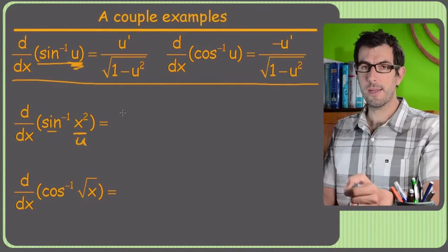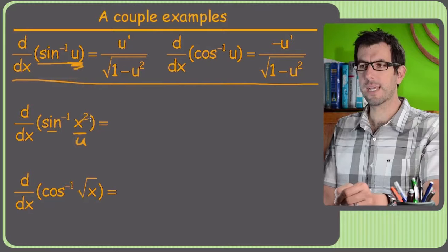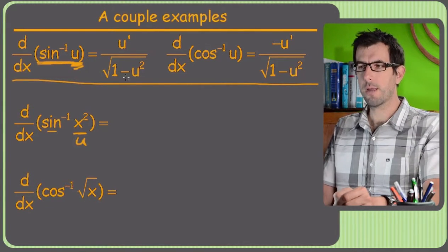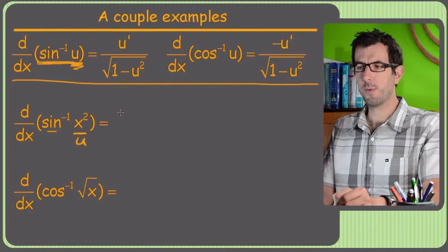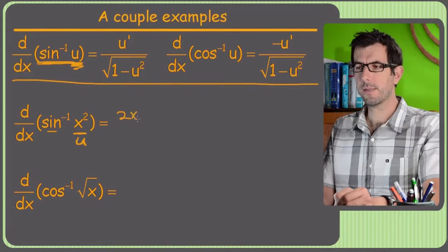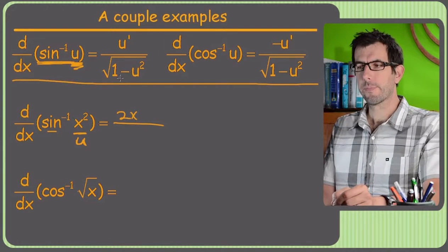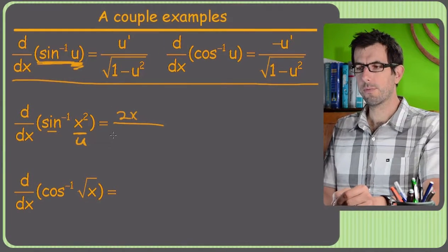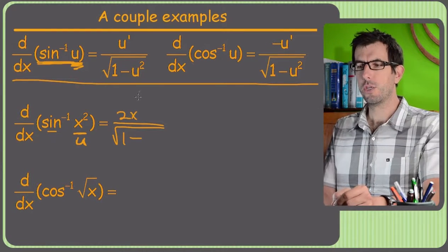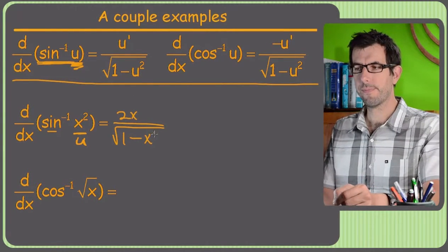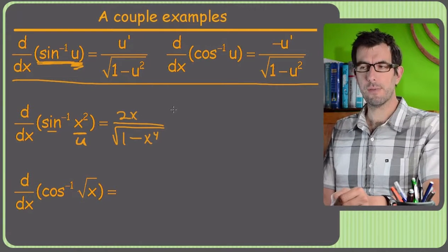So when I go to plug and chug, all I'm going to do is just assume that x squared is my U. So the derivative of the inverse sine here is U prime. So the derivative of x squared is 2x. And then the denominator, we've got square root of 1 minus U squared. But since my U was already x squared, this is x to the fourth. Pretty crazy. But that's all there is to it. Not too bad, right?